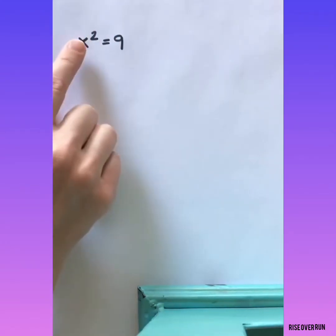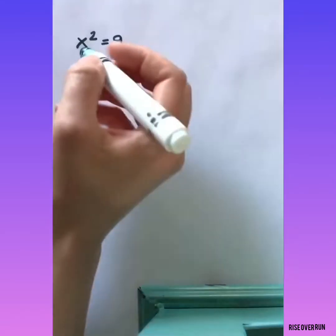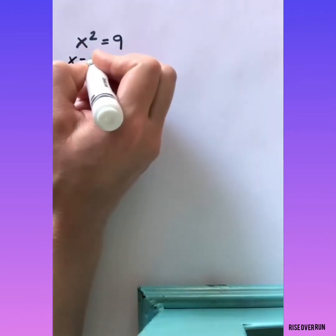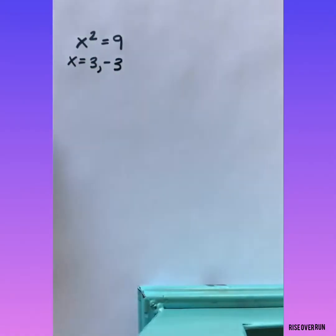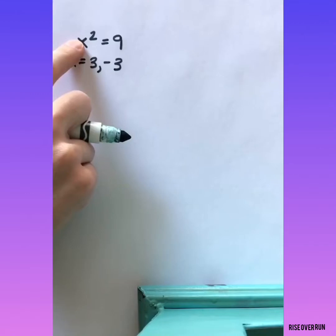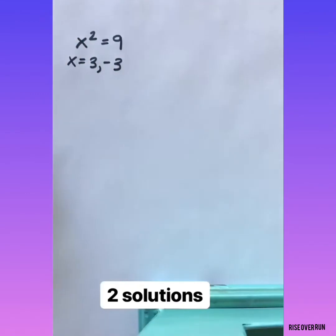Let's look at this simple equation first. If we're going to think about what values of x would make this true, well there are two. x could be 3 and it could be negative 3. So there are two solutions to this equation. When we solve quadratics, many times there are two solutions to the equation.